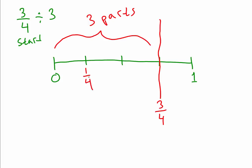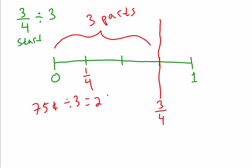In fractions, you always make your denominator whatever the whole is, and the whole is four — so this is one out of four. If you take three-fourths and divide into three parts, you get one-fourth. It makes total sense: think money. Three-quarters is 75 cents. If you take 75 cents and divide it into three parts, you get 25 cents per person, which is a quarter — one-fourth.